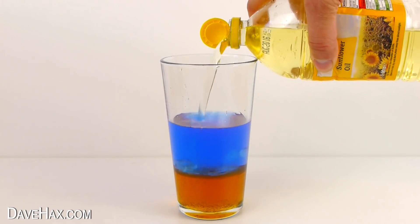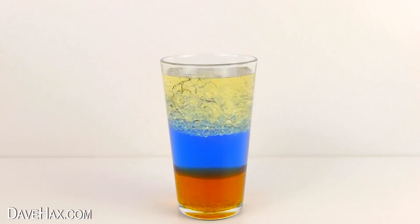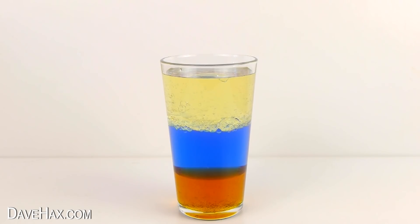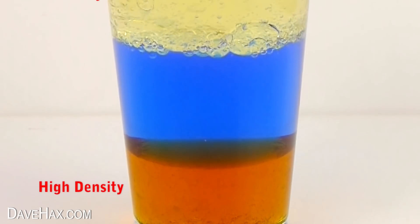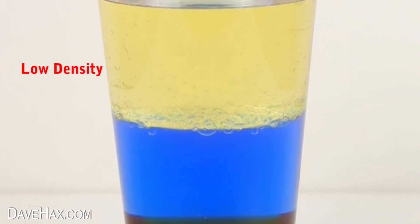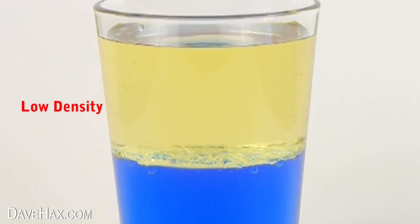Then finally, fill the glass up with some oil, and leave it to settle for about 15 minutes. You can see the oil floats on top. These liquids separate out into different layers because they're different densities, and they don't mix. The syrup has the highest density, so it sinks to the bottom. And the oil, which has the lowest density, rises to the top.